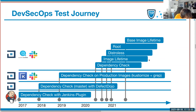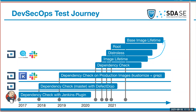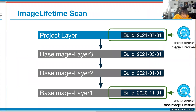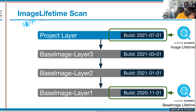Now we come to the enhancement of the image lifetime check, and that is the base image lifetime check. Do you have an idea what it does? This was on top - you see the image lifetime, which is when the image got built. But in an image you have to say FROM and then your base image. You give it a tag like 1.1.1. What I see is that often, especially developers forget to update these tags.